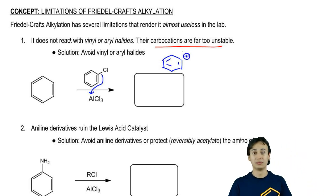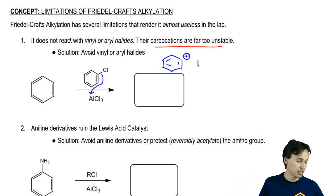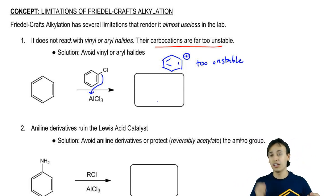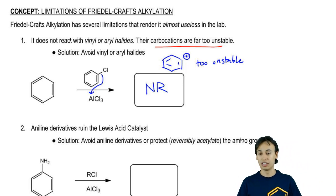What do you think about that carbocation? That's a really unstable carbocation because it can't resonate anywhere. It's stuck on a double bond. That's one of the worst, most unstable carbocations - too unstable. The answer here is that if you're working with an aryl or vinyl alkyl halide, no reaction.